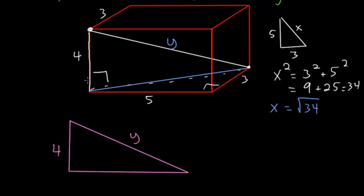So we have 4, that's this side here. We have the square root of 34, which is this length here on the bottom, which we just found. We're trying to find this diagonal. So we'll again use the Pythagorean Theorem. y squared is equal to 4 squared plus the square root of 34 squared. 4 squared is 16.